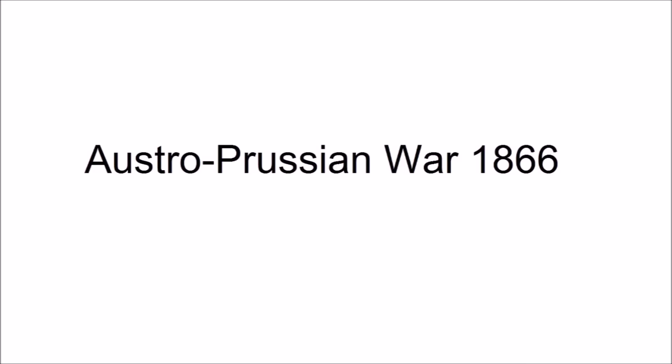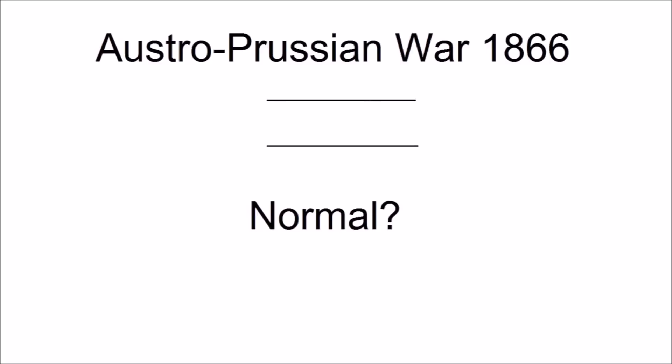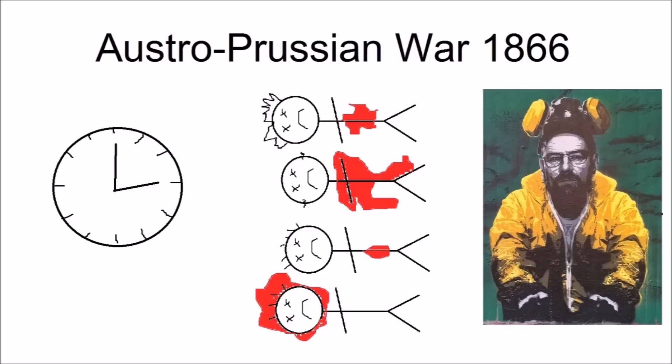War number four: The Austro-Prussian War. On the surface, the Austro-Prussian War of 1866 seems to be a typical war with no weird characteristics. The war went on for a normal amount of time, many men were killed, and there are no Breaking Bad episodes in sight.